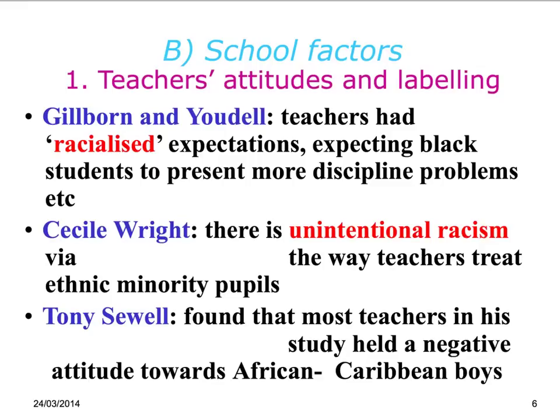The other side of the argument is things that go on in schools — teachers' attitudes and labelling. Gillborn and Youdell said that teachers had racialized expectations; they expected black students to present more discipline problems and were more likely to challenge their behaviour negatively. Cecile Wright said there is unintentional racism in schools — teachers do not do it on purpose, but they exclude certain ethnic groups from discussions around a shared culture that they may not have with the white British majority in the class.